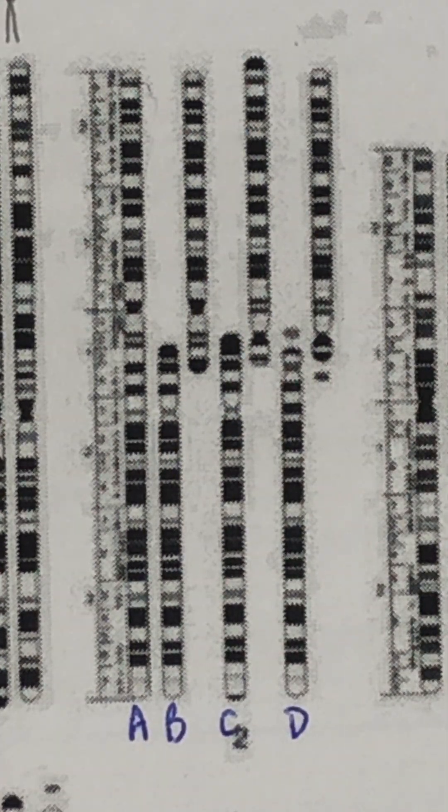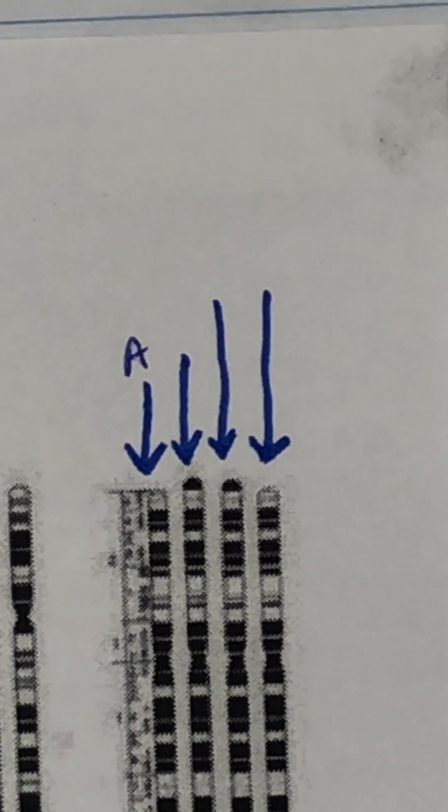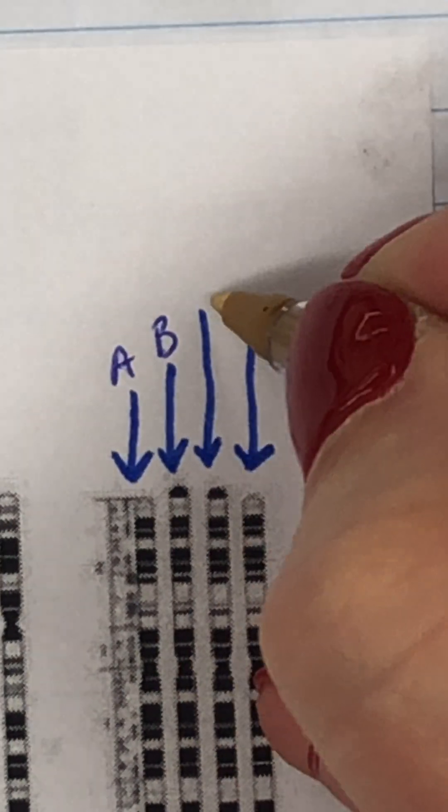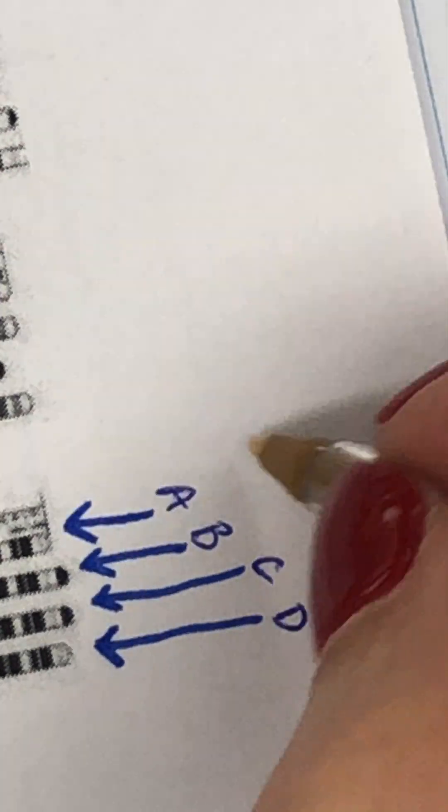So I'd like you to think about this. I will tell you that the first organism, organism A—let's go right down here: organism A, organism B, C, and D—organism A in all of these positions is human.